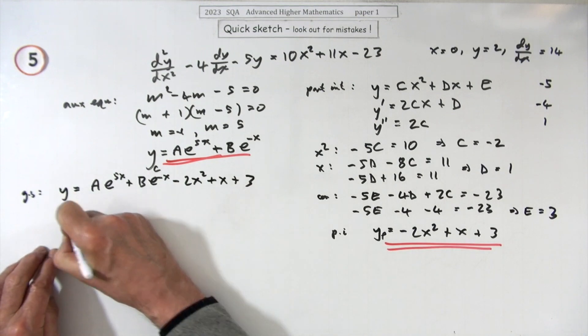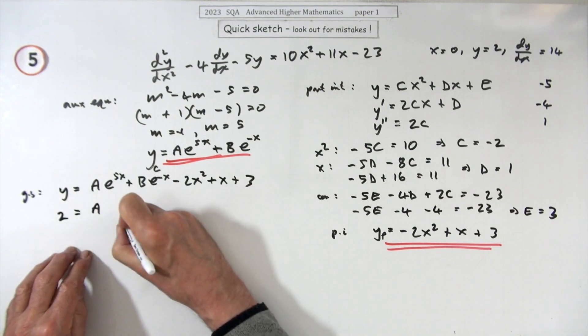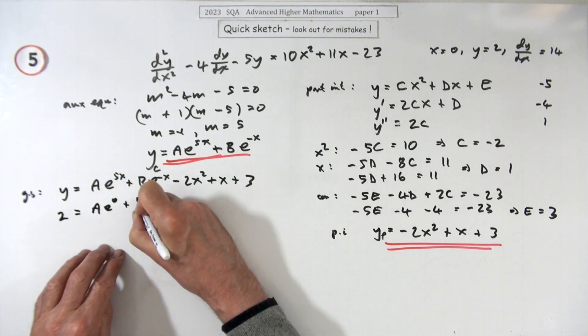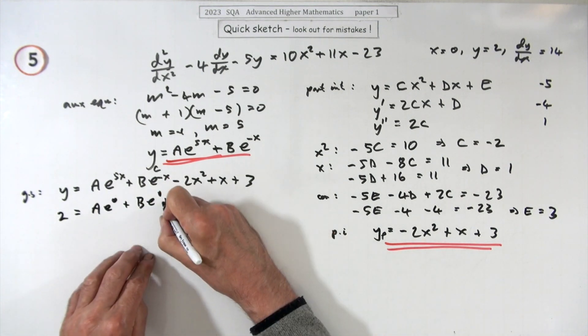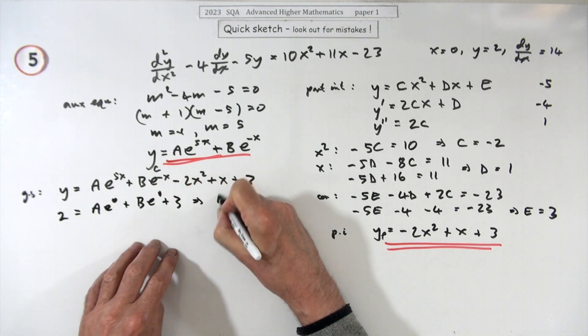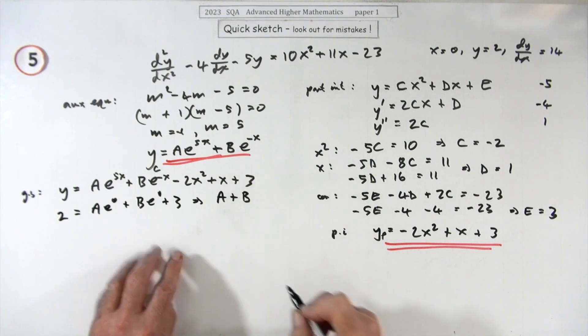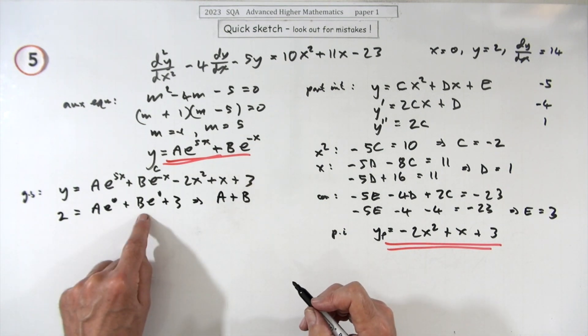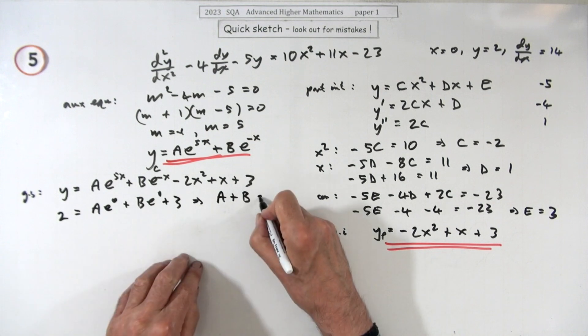y is 2, so 2 is equal to a e to the 0 plus b e to the 0, put them in, plus 3. So that gives me a little linear relationship between a and b. a and b comes to negative 1.